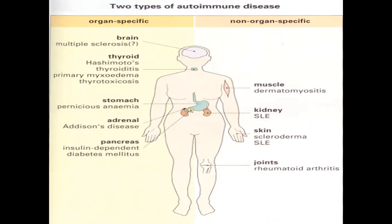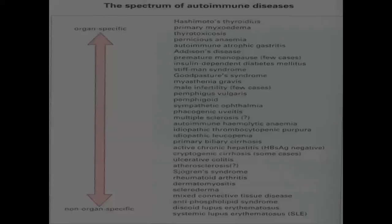In the brain, there are organ-specific diseases like multiple sclerosis. There is Hashimoto's thyroiditis and primary myxoedema in the thyroid. In the stomach, we have pernicious anemia. In the adrenal gland, we have Addison's disease. In the pancreas, we have insulin-dependent diabetes mellitus. In the muscles, you have dermatomyositis. In the kidney and skin, you have systemic lupus erythematosus and scleroderma. In the joint, you have rheumatoid arthritis.